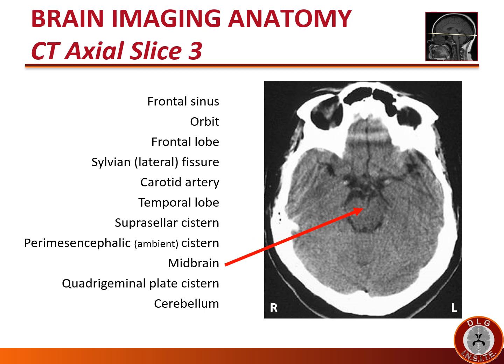We are now at the midbrain level of the brainstem. The midbrain is recognizable by two smaller lumps dorsally called the colliculi, and more anteriorly the larger rounded lumps forming the cerebral peduncles. Just dorsal to the midbrain is the CSF space called the quadrigeminal plate cistern — named 'quadrigeminal' meaning four twins — because of the four colliculi: two superior and two inferior. Colliculus means 'hill' in Latin.